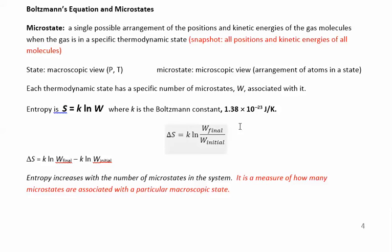Entropy equals a constant times the natural log of W, where W is the number of microstates. We won't plug numbers into this equation — we'll just use it conceptually. You can calculate the change in entropy by counting microstates in your products and reactants. The key takeaway is that entropy increases with the number of microstates. Entropy is a measure of how many microstates are associated with a particular macroscopic state.